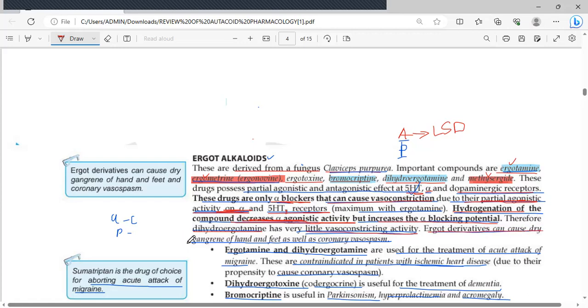Ergot derivatives can cause dry gangrene of the hand and feet as well as coronary vasoconstriction, because if they have partial agonistic activity on alpha-adrenergic receptors, you understand that they will induce vasoconstriction and that can cause ischemia, leading to gangrene of hand and feet. They can also cause coronary vasoconstriction. So if they can cause coronary vasoconstriction, I would highly contraindicate them in people with coronary artery disease or ischemic heart disease.